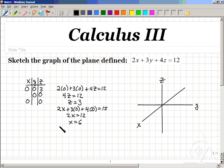In the last case, if x and z are 0, then 2 times 0 plus 3y plus 4 times 0 equals 12, so 3y equals 12 and y equals 4.